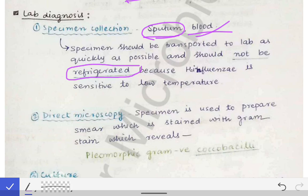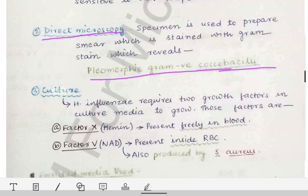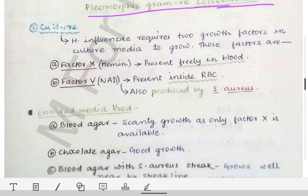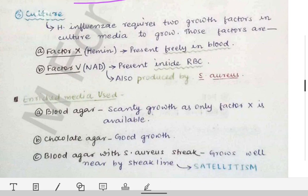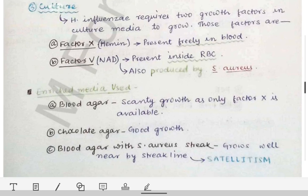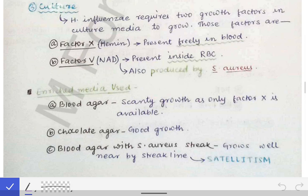The specimen should not be refrigerated if there is suspicion of Haemophilus influenzae infection. It should be directly transported to the laboratory and examined as quickly as possible. On direct microscopy, when we prepare a smear and examine it under the microscope, we see pleomorphic gram-negative coccobacilli. It is called coccobacilli because it cannot be differentiated as either cocci or bacilli — it appears as both.